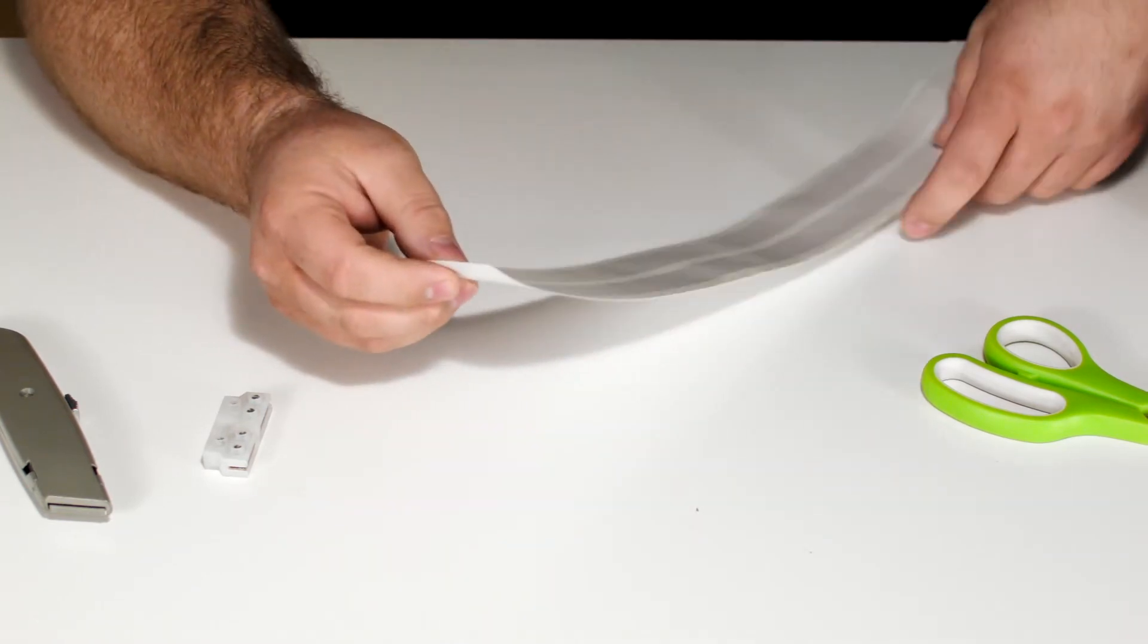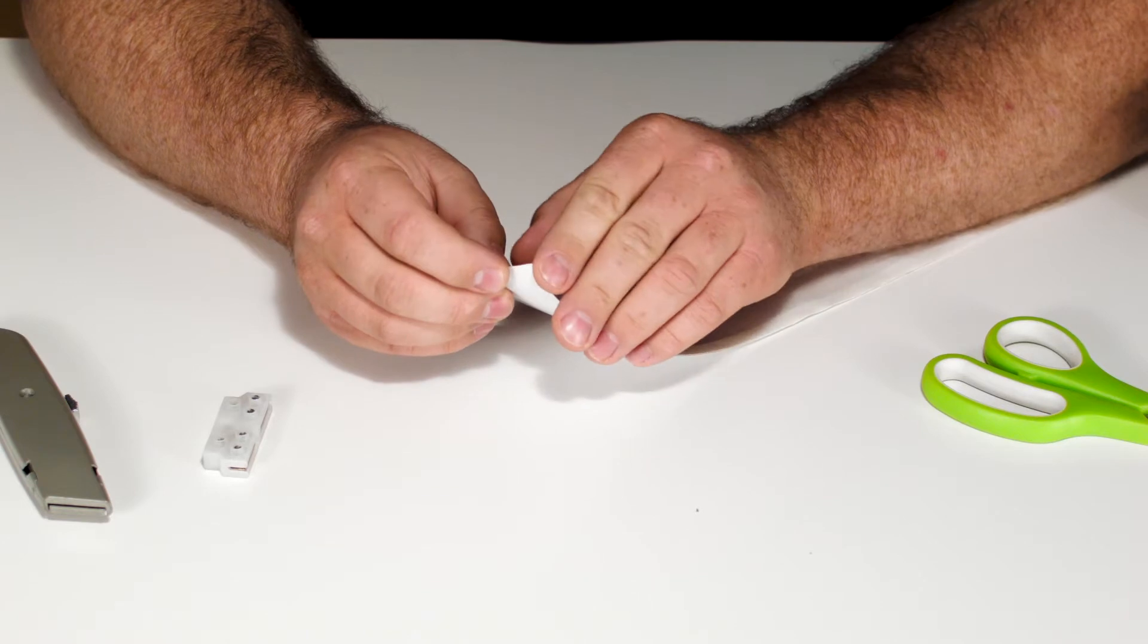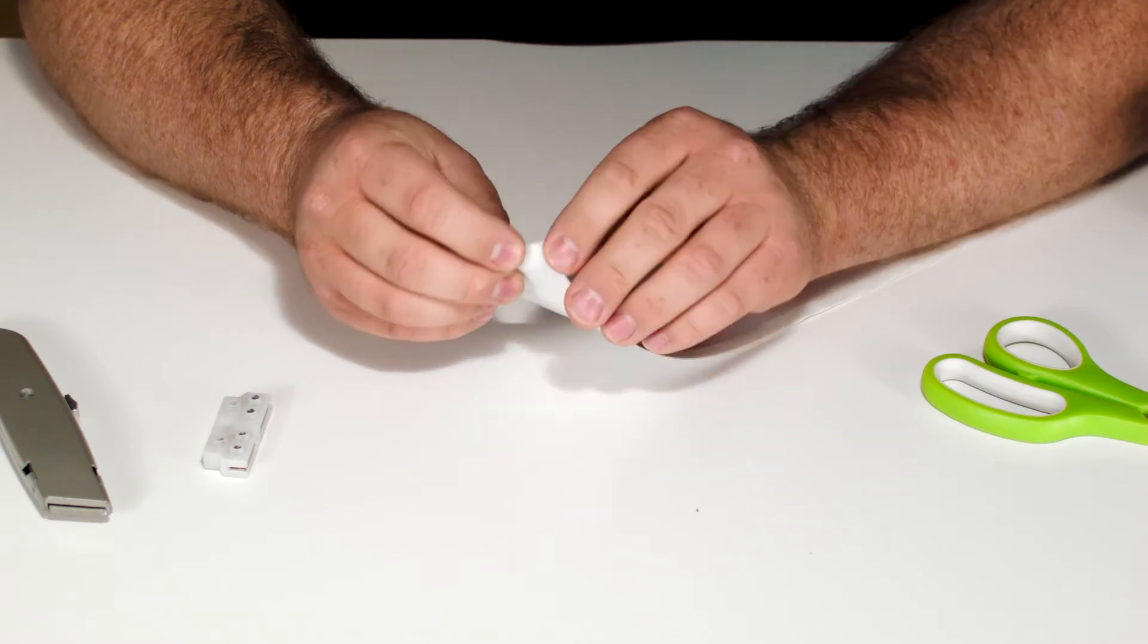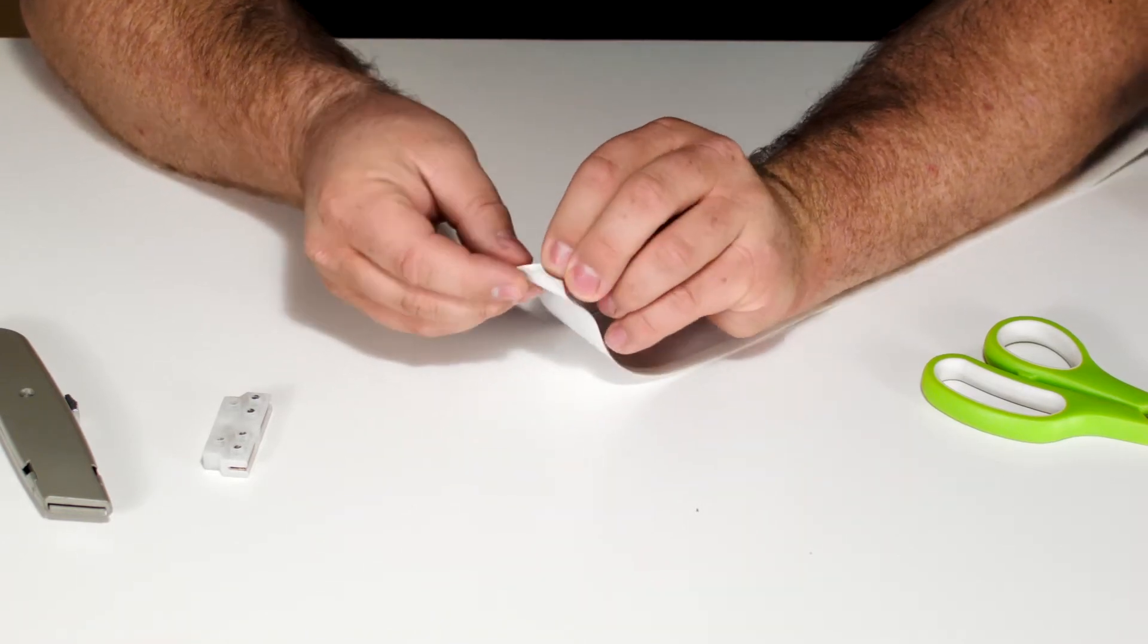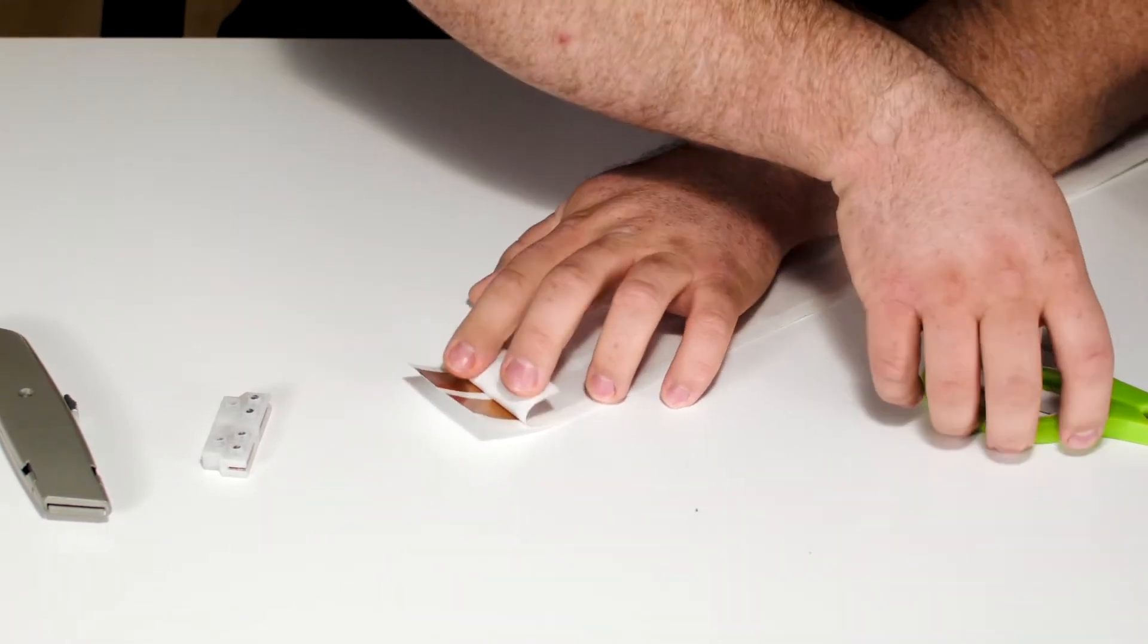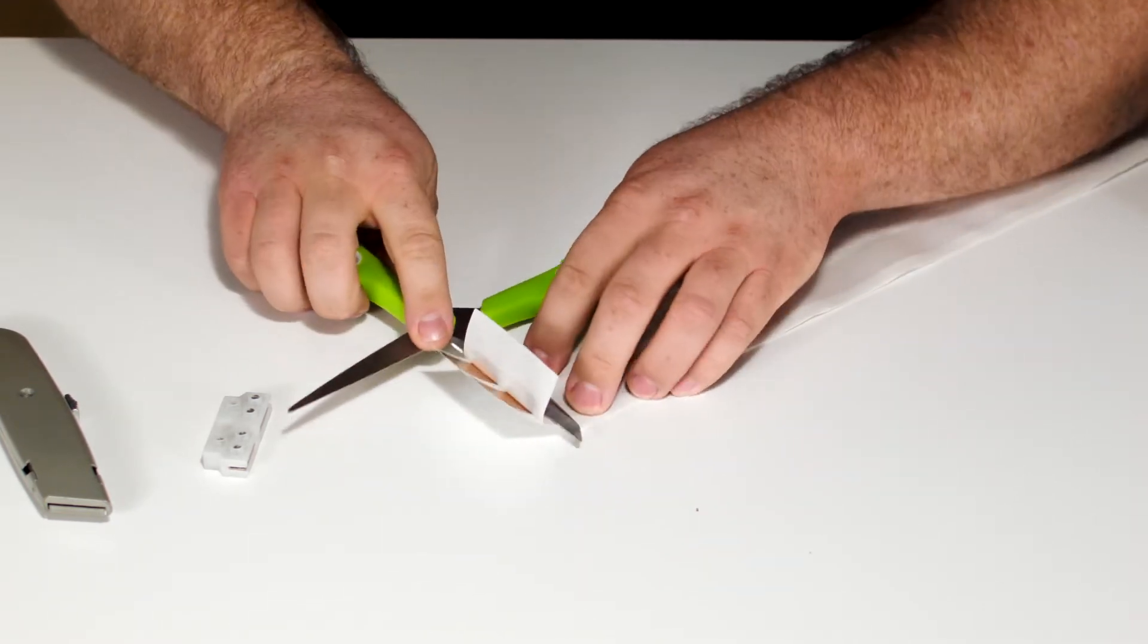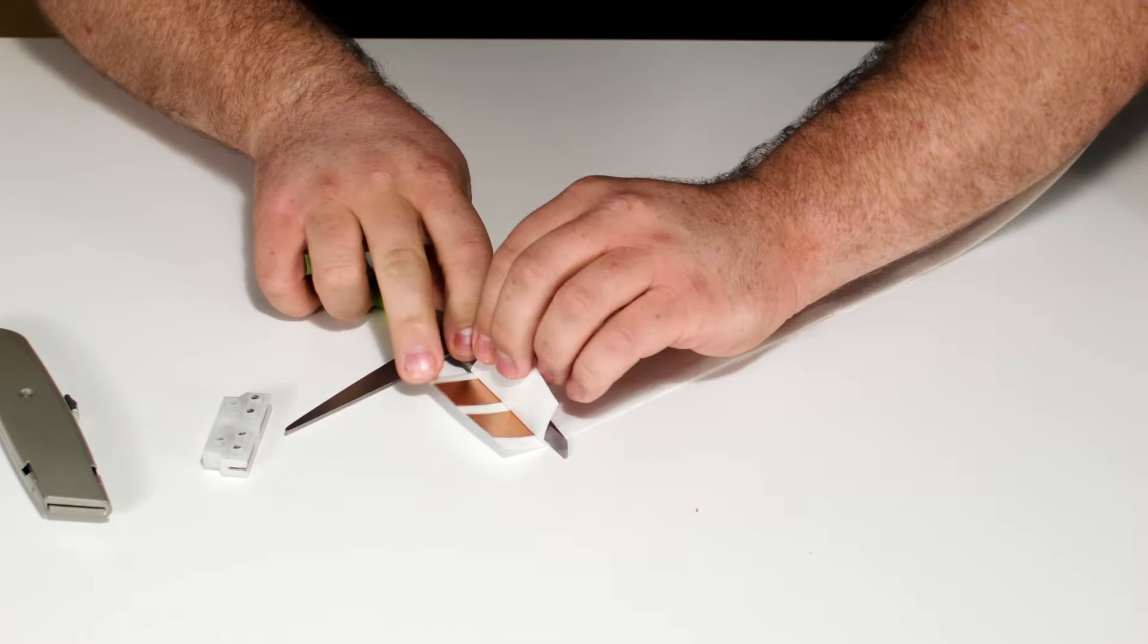To get down to the actual conductors, it's easiest first of all just to remove a little bit of the protective backing. You can fold it back, but I prefer to just pull it away.